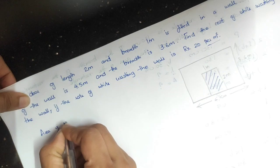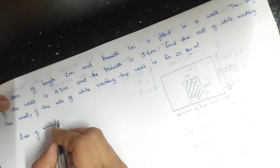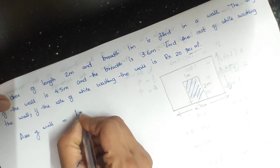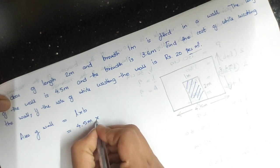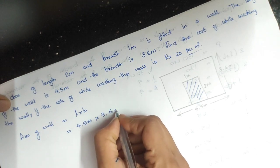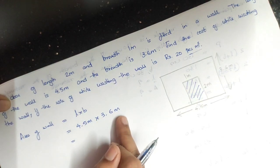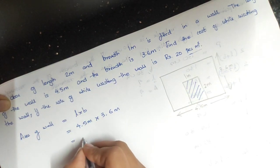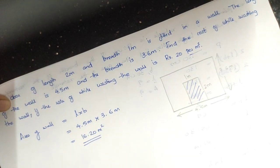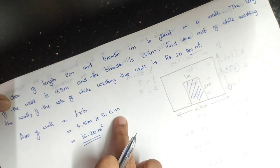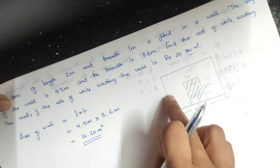Area of wall equals L into B equals 4.5 meters into 3.6 meters equals 16.20 meter square. This is the complete area of the wall.